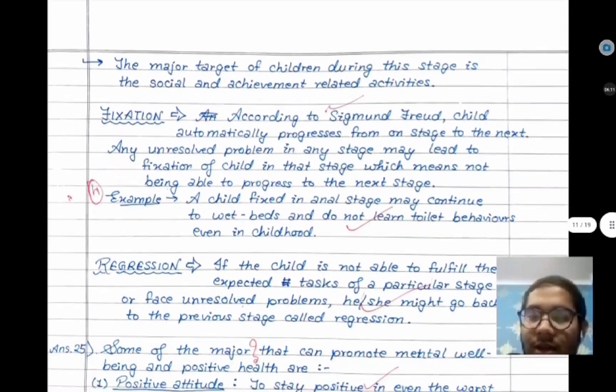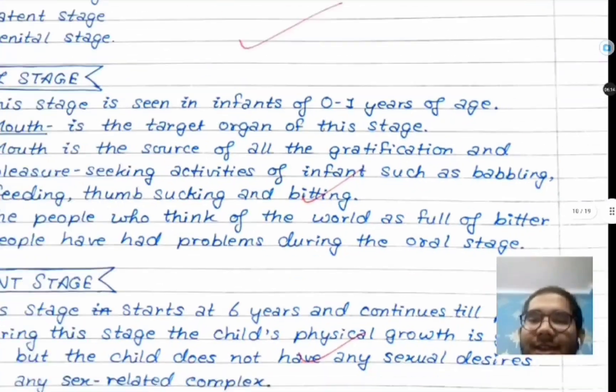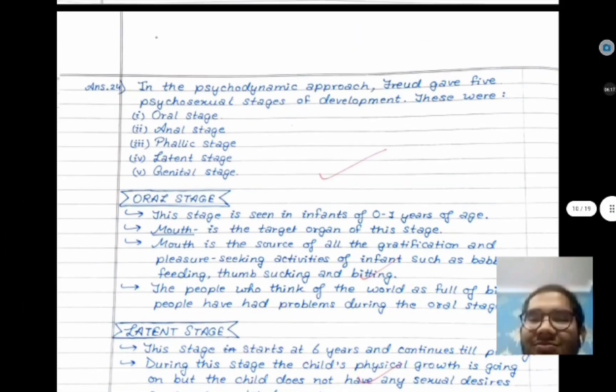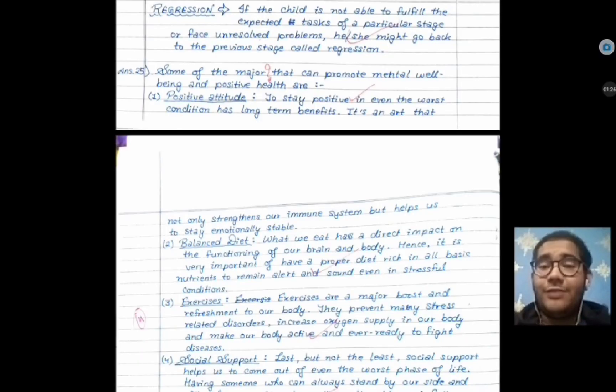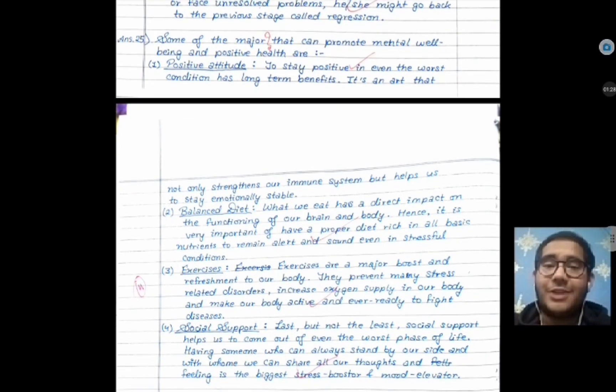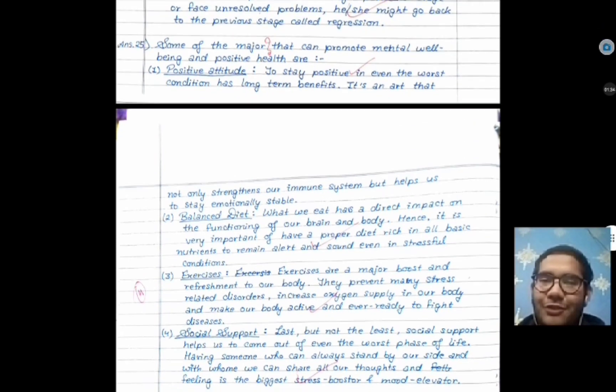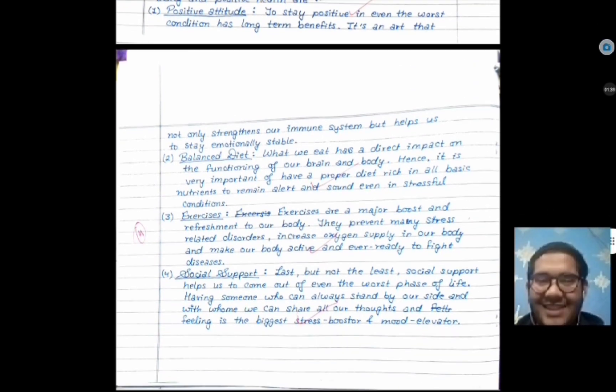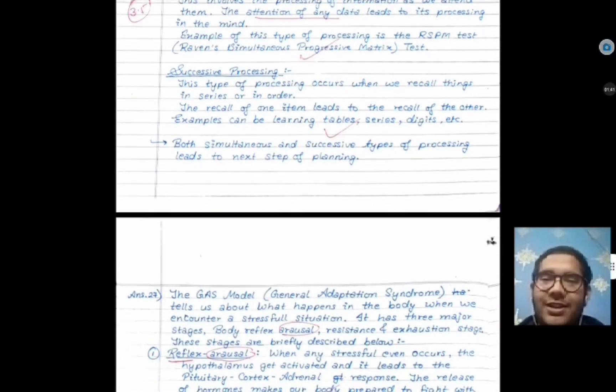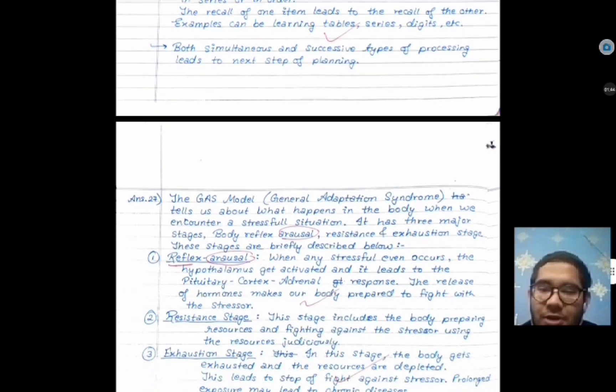This is a six marker question. Very good, so I have done this and got a good number. After that, we have the major factors that promote mental well-being and positive health. There are many in the book, but I have written four of my favorite points: positive attitude, balanced diet, exercise, and social support. Then I have all these, this is the GAS model.